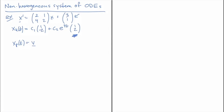Because it has a component in that direction, we're going to have to take x_p to be v·t plus a constant vector u to fix that problem. You'll see how those two vectors get calculated as we go along. We take x_p prime and find that it is going to be the vector v, and that means we have an equation from plugging in x_p.